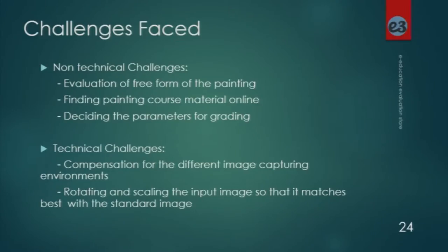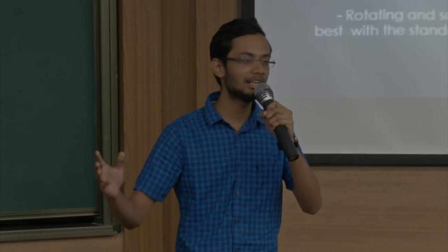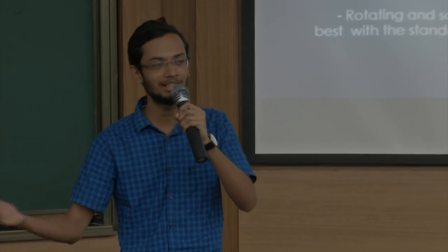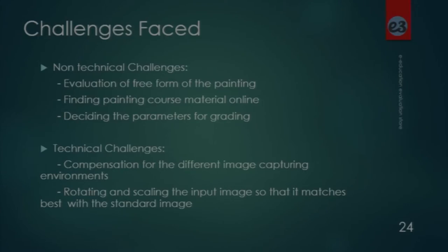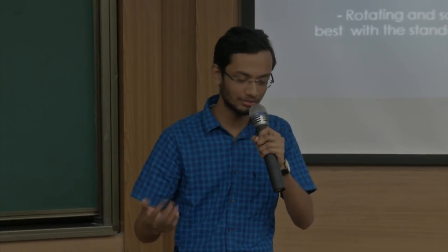The technical challenges are the following. First is compensation for different image capturing environments. When a student uploads an image, he can do it in various ways — in white light, in sunlight, or even in a shadow under a tree. This will cause changes in the color of the image captured, so the colors captured will be a little different from the original drawing. That has to be compensated, otherwise it will give faulty results.